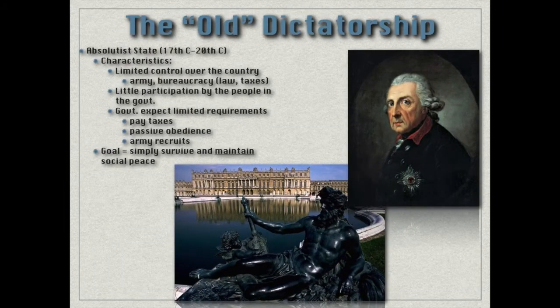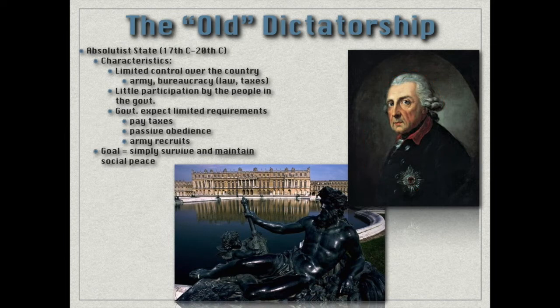Dictators are nothing new to European history. We've seen what's called the old dictatorship, and today we'll look at what the new dictatorship entails. Old dictatorship tends to be the absolutist monarchies of the 17th through 20th centuries. The characteristics of an absolutist state — you can see an example with Frederick the Great of Prussia — include control over the country, but it's pretty limited: really just the army, the bureaucracy, the laws, and taxes.